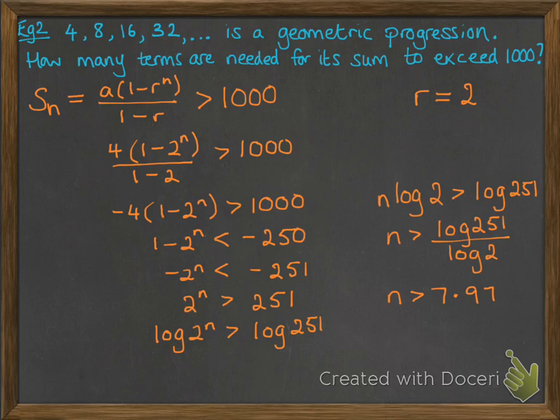So n has to be greater than 7.97, which means we need 8 terms to get the sum of our sequence to be more than 1,000. Be careful with that.